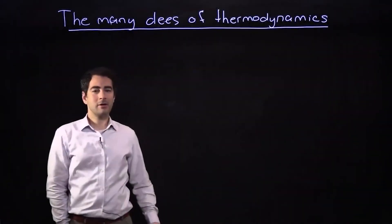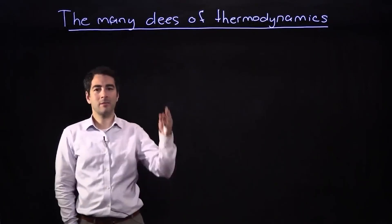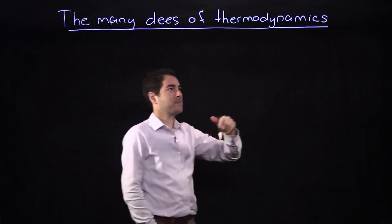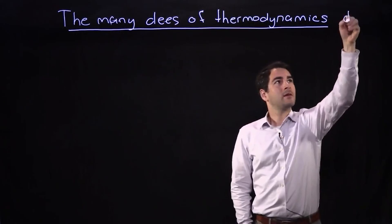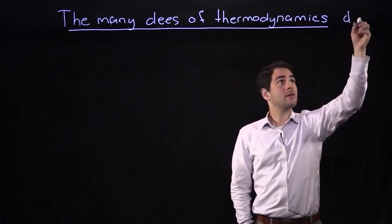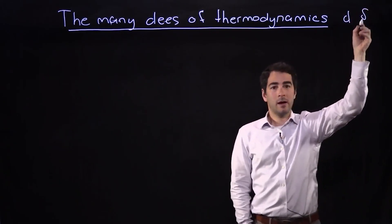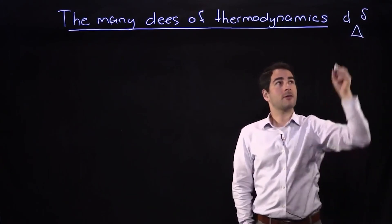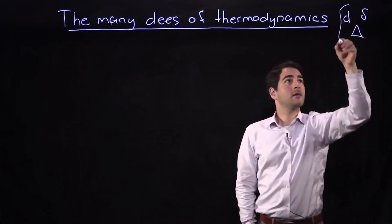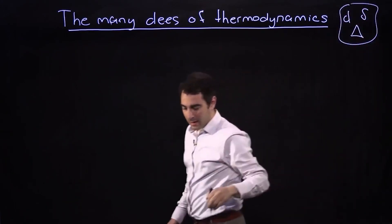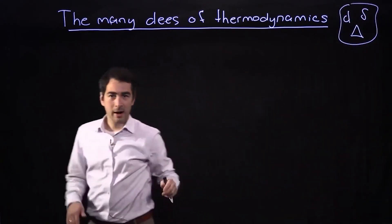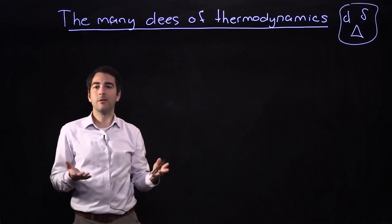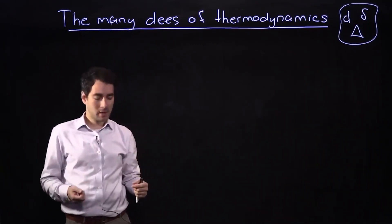Hi. Today we're going to discuss the many d's of thermodynamics. We're going to talk about lowercase d, lowercase Greek d, and uppercase Greek d. I wanted to clarify why we have different d's that we use, when we use them, and give some physical intuition for what they mean.